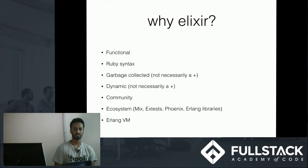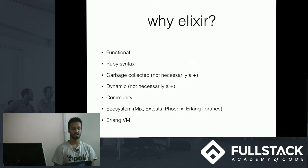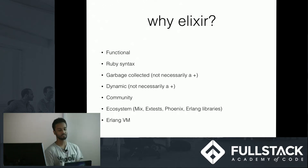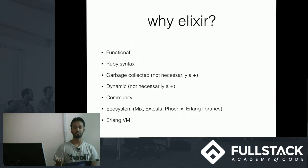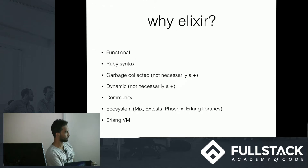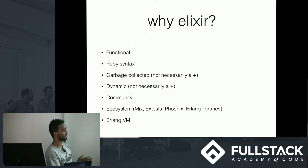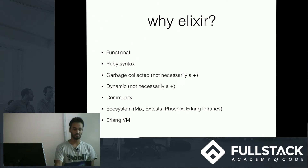So why Elixir out of all the programming languages? Elixir is functional — that's the main thing. It has a Ruby syntax, so it's developer friendly. It's garbage collected, which means you don't have to manage memory manually. It's dynamic, so you don't have to type everything out — you have more freedom. It has a growing community with a lot of Ruby developers getting into it. It has a nice ecosystem: Mix, which is like NPM on steroids; ExUnit, a built-in testing framework; Phoenix, a great web framework; and access to Erlang libraries and the Erlang VM.